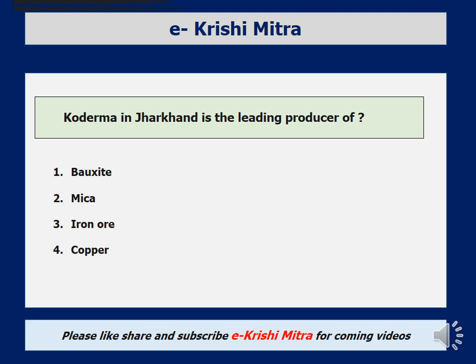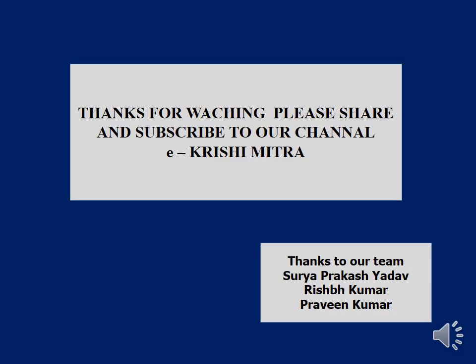Final question: Koderma in Jharkhand is a leading producer of which mineral? Options are bauxite, mica, iron ore, and copper. Koderma in Jharkhand is basically famous for mica. Please share and subscribe to our channel EKC Mitra for coming videos. Thank you for watching.